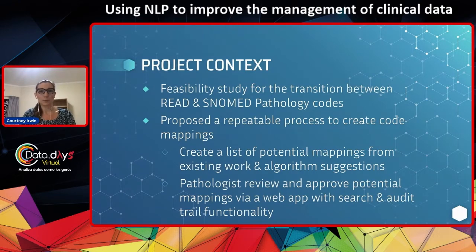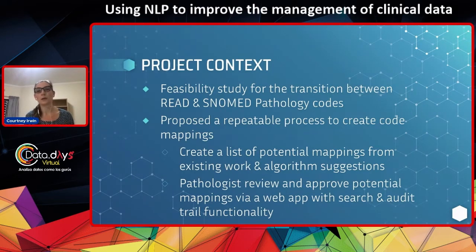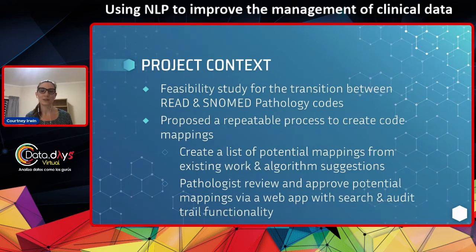For this repeatable process, we proposed the following. We suggested creating a list of potential mappings informed both by some existing, but quite sparse work that had already been done on the mappings, and using an algorithm to generate more suggestions. Once we had a list of potential mappings between these codes, we wanted to get pathologists to review and approve these mappings via a web application, which also had a search functionality and maintained an audit trail. Previously, people would just use Excel spreadsheets, but we thought it was quite important to be able to see who approved what, at what time, with what comments.